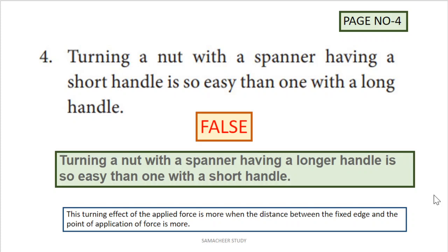Next: 'Turning a nut with a spanner having a short handle is easier than one with a long handle.' The turning effect depends on the distance between the fixed edge and the point of application of force. A longer handle means greater distance, so less force is needed. Therefore, turning a nut with a longer handle is easier. This statement is false.